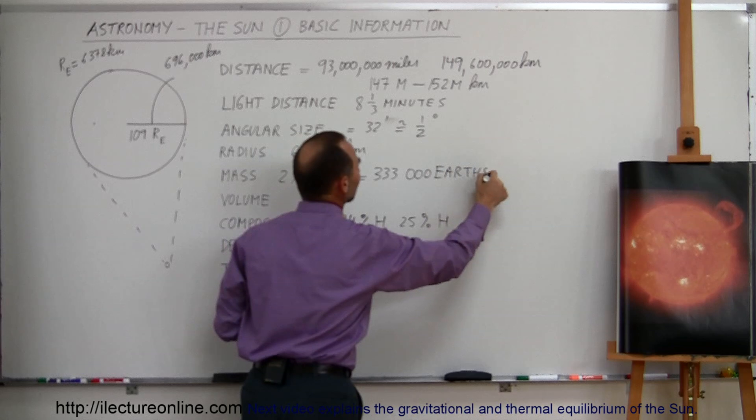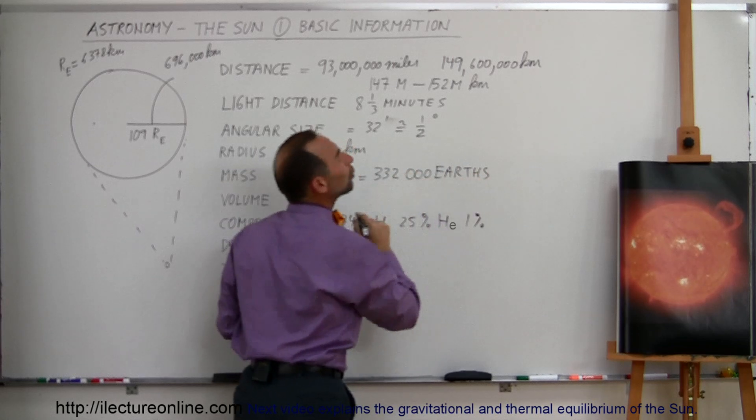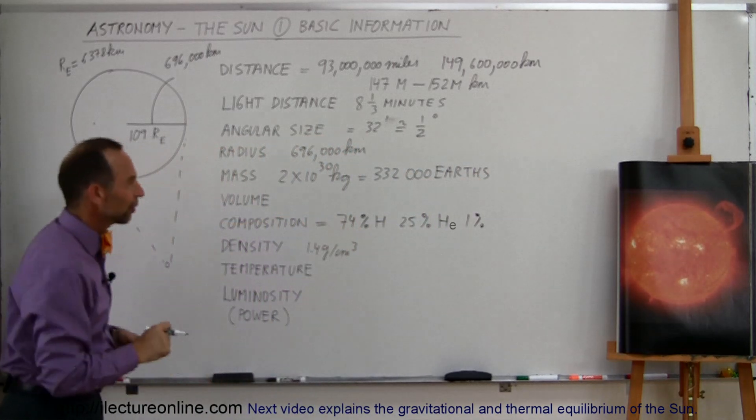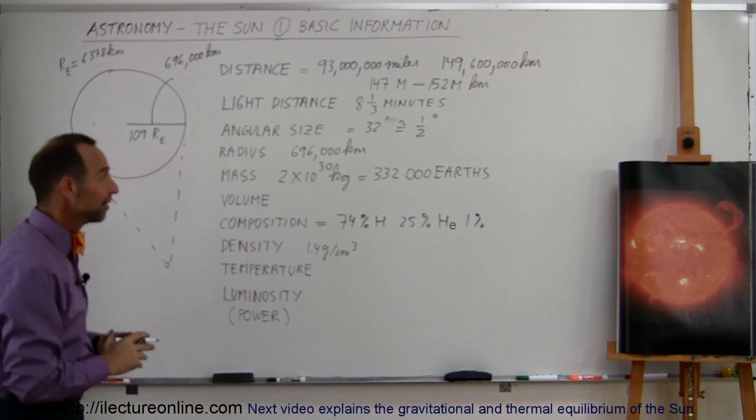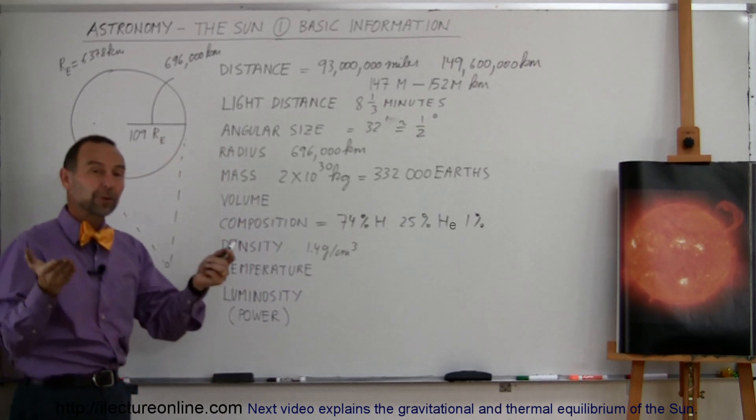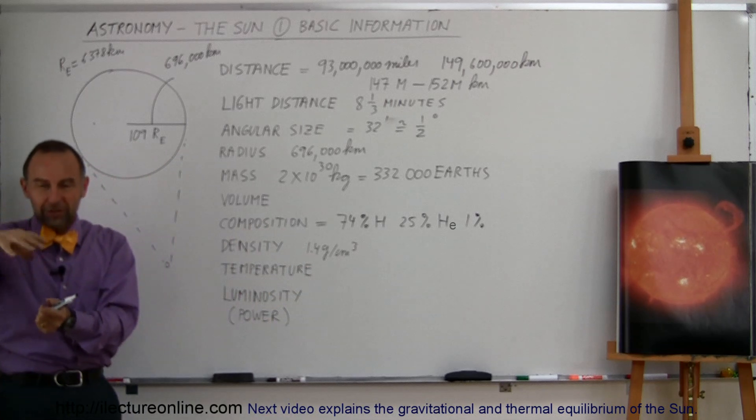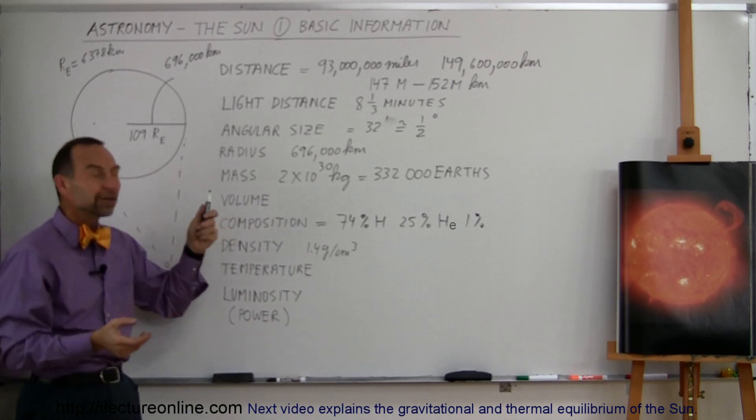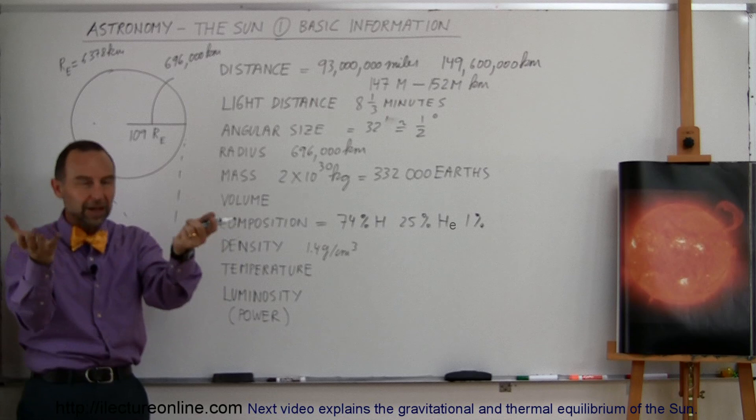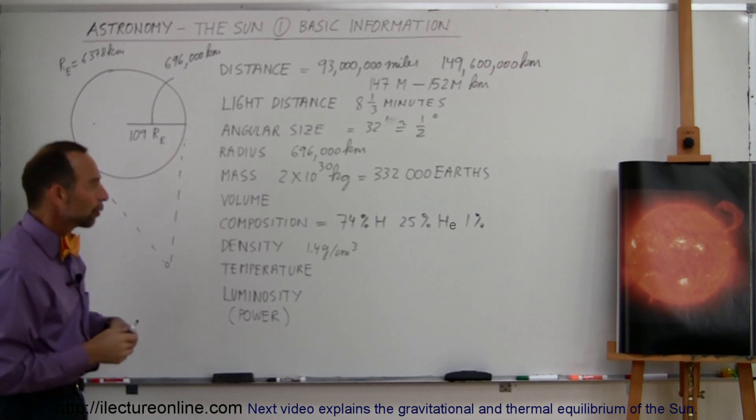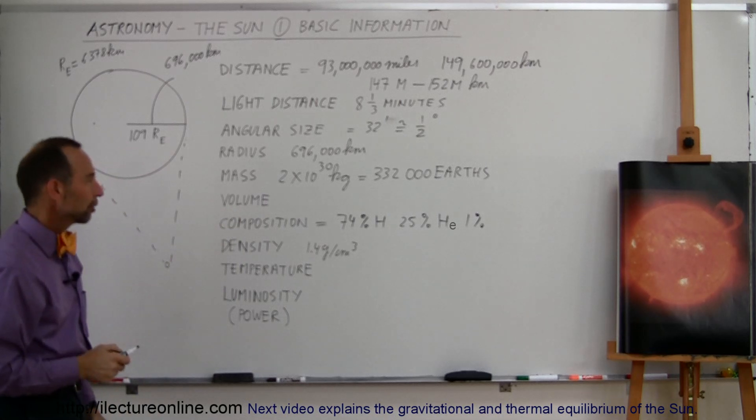I think it's a little bit less, about 332,000. But who cares about 1,000 Earths or not? When it comes to that many, it doesn't make a lot of difference. In other words, if you were to put the Sun on a scale on one side and you want to put Earths on the other side to balance it out, you would need 332,000 Earths to balance out the weight of the Sun compared to the weight of the Earth or the mass of the Sun to the mass of the Earth.